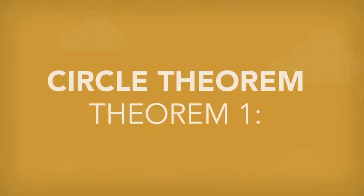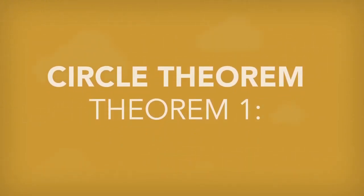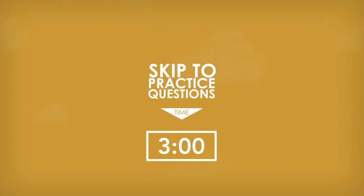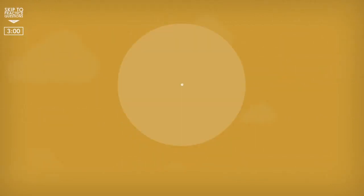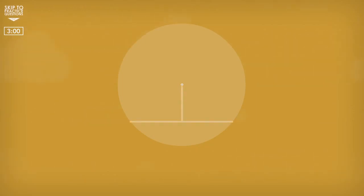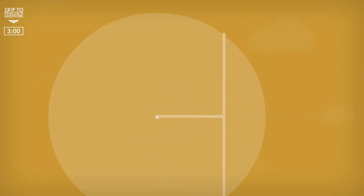Circle theorems. Theorem 1. The first part of this theorem is that if you draw, or if there's a line from the centre of a circle to the centre of a chord, this line will always be perpendicular to the chord, despite where the chord is in the circle.